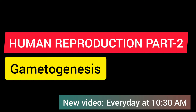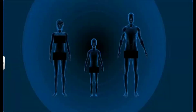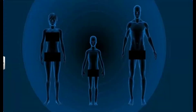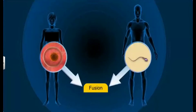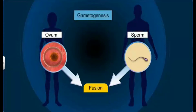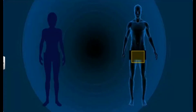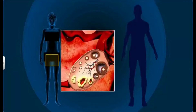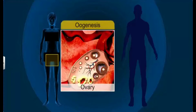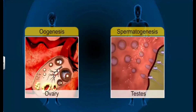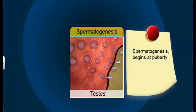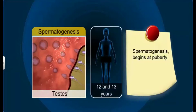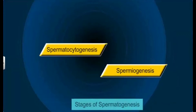So without wasting any time, let's start studying gametogenesis. Reproduction is an important process in human beings. It involves the fusion of male and female gametes — sperm and ovum. These gametes are formed by the process of gametogenesis. In males, this occurs in the testis and is called spermatogenesis, whereas in females it occurs in the ovary and is called oogenesis. Interestingly, spermatogenesis begins at puberty, usually between 12 to 13 years of age, and is divided into two stages: spermatocytogenesis and spermiogenesis.